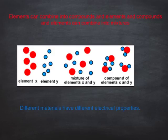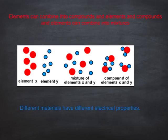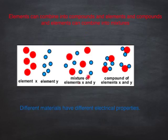We also know that elements can combine into compounds, and elements and compounds can combine into mixtures. Here's an example of one element, element X, and here is element Y. You'll see that these little circles represent their atoms. Element X is made up of these big red atoms, and element Y is made up of these little blue atoms. When we put them together, we can make a mixture of the different elements — they're not combined, they're just sitting there together. Or we can actually chemically combine element X and element Y and make them into a compound.